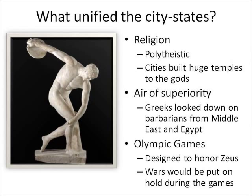Athens and Sparta were very bitter rivals and fought constantly. But there are things Athens, Sparta, and most other Greek city-states had in common. Almost all were polytheistic, believing in many gods — Zeus, Athena, Aphrodite, Dionysus, and others. Cities were known for building huge, ornate temples with precious metals to honor the gods. Greeks also had a huge superiority complex — they looked down on the rest of the world, especially people from the Middle East and Egypt, and called them barbarians. That's really where the term barbarian originated.